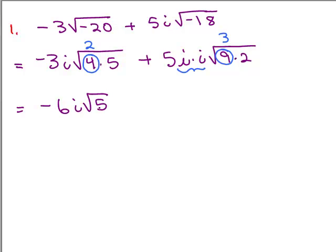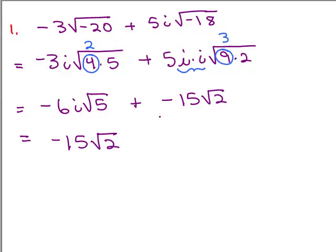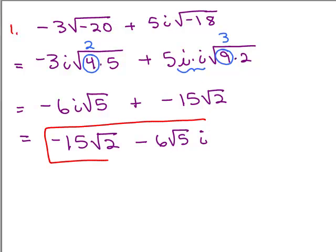You can put the i at the end of the square root — just make sure it's not underneath the square root symbol. Over here, I've got 5 times i squared, and remember that means 5 times negative 1. So that's negative 5 times 3, which is negative 15 square roots of 2. The second term is the real part, so I write that first: negative 15 square roots of 2. Then the imaginary part second: negative 6 square root of 5 with i at the end. That's problem number 1.